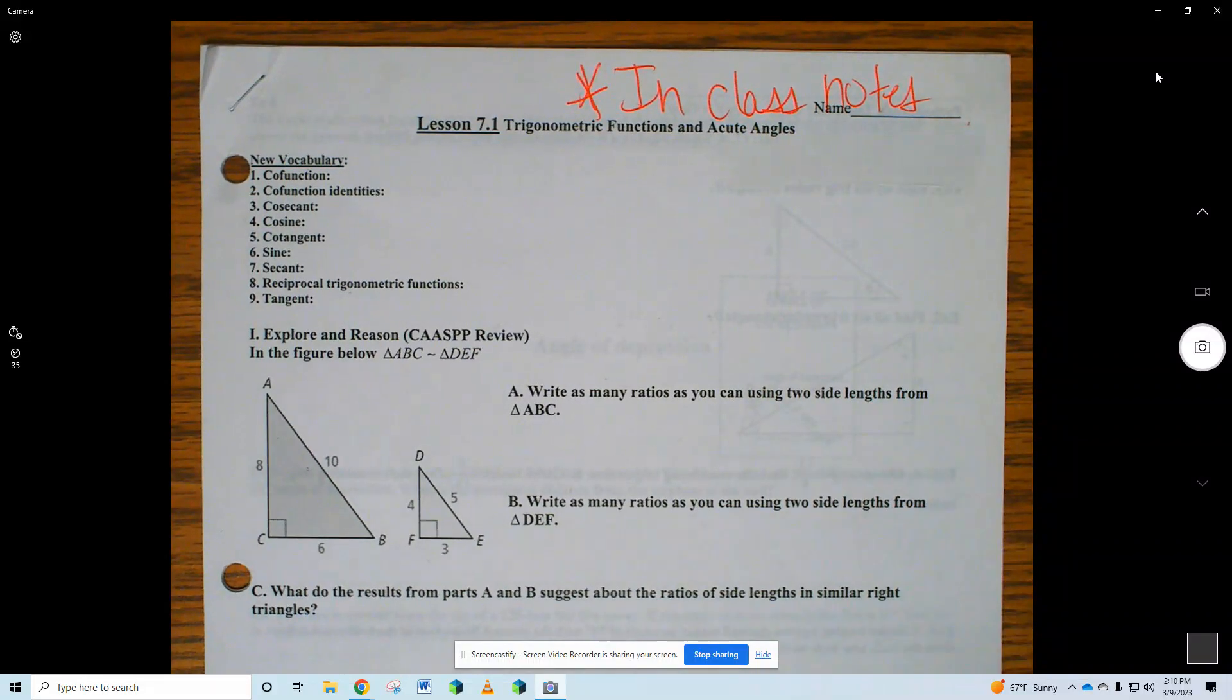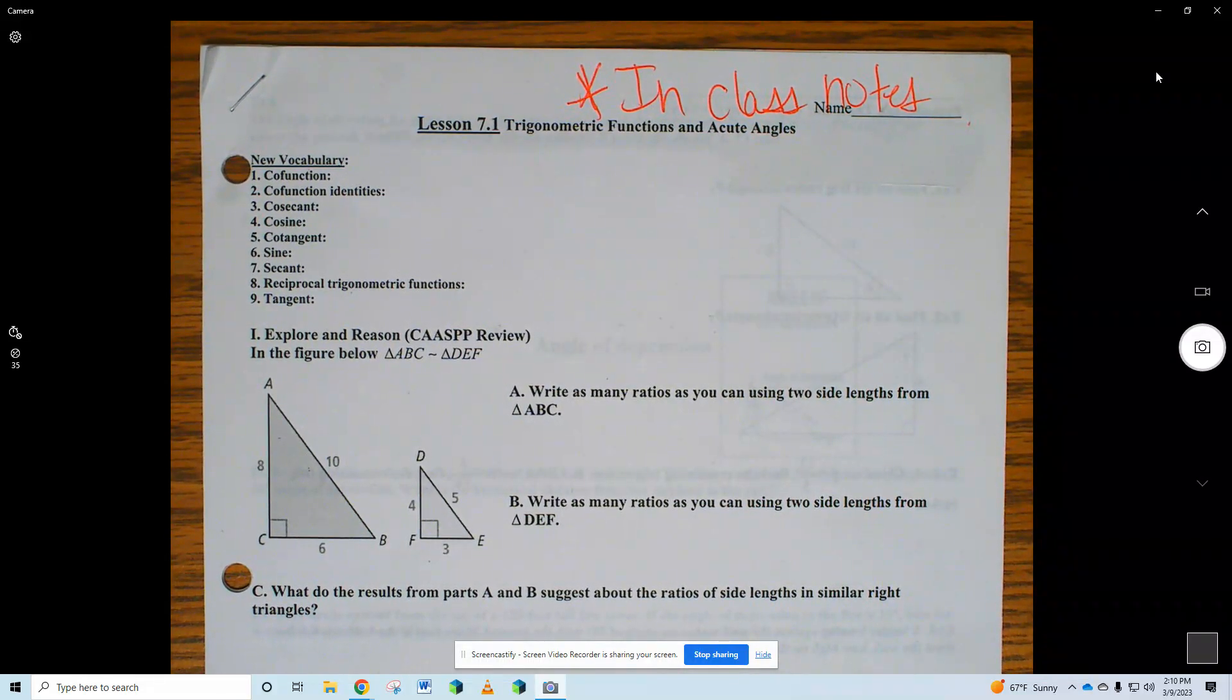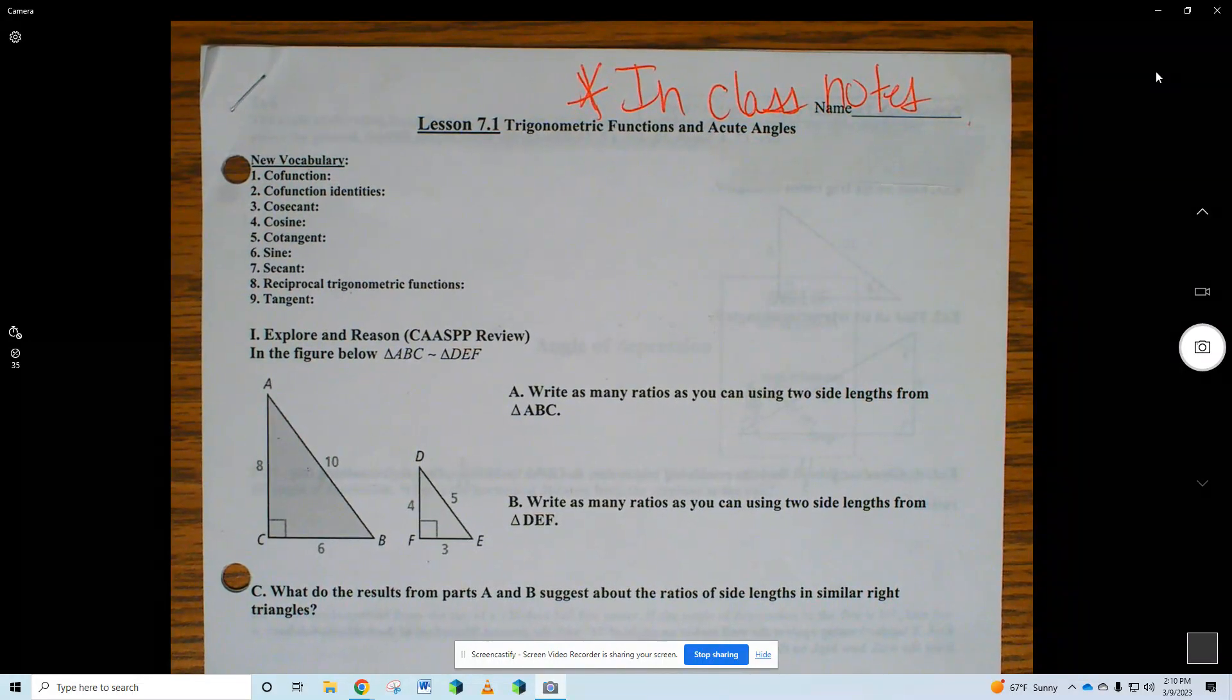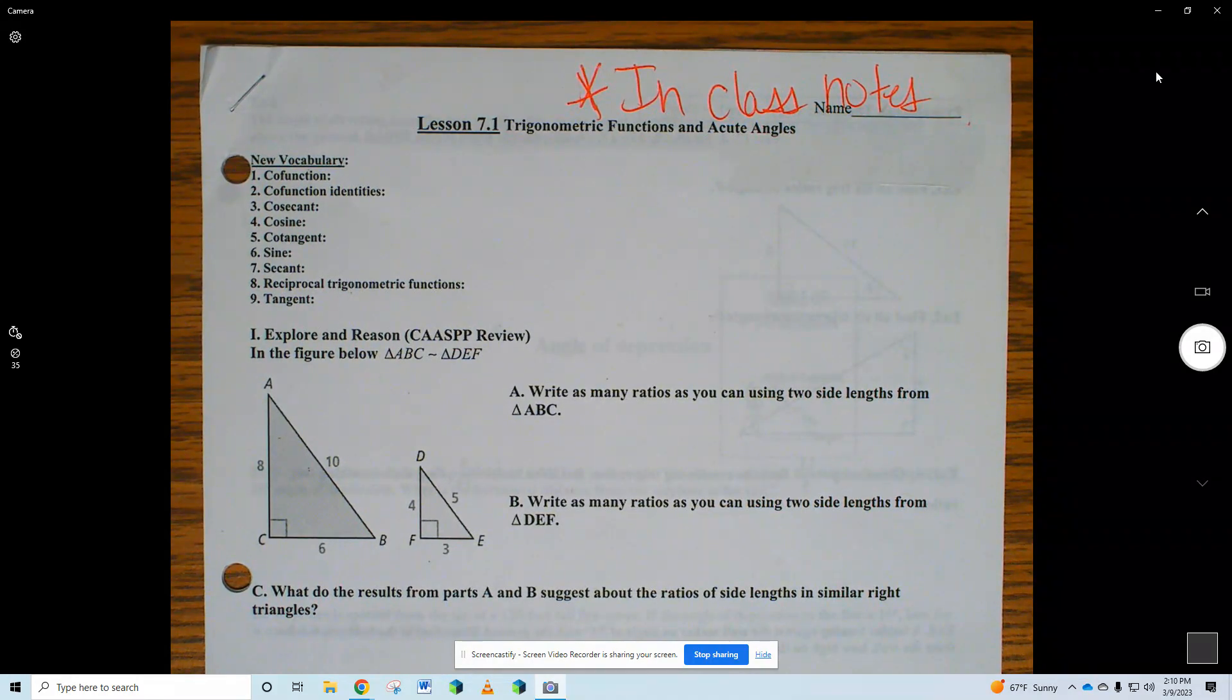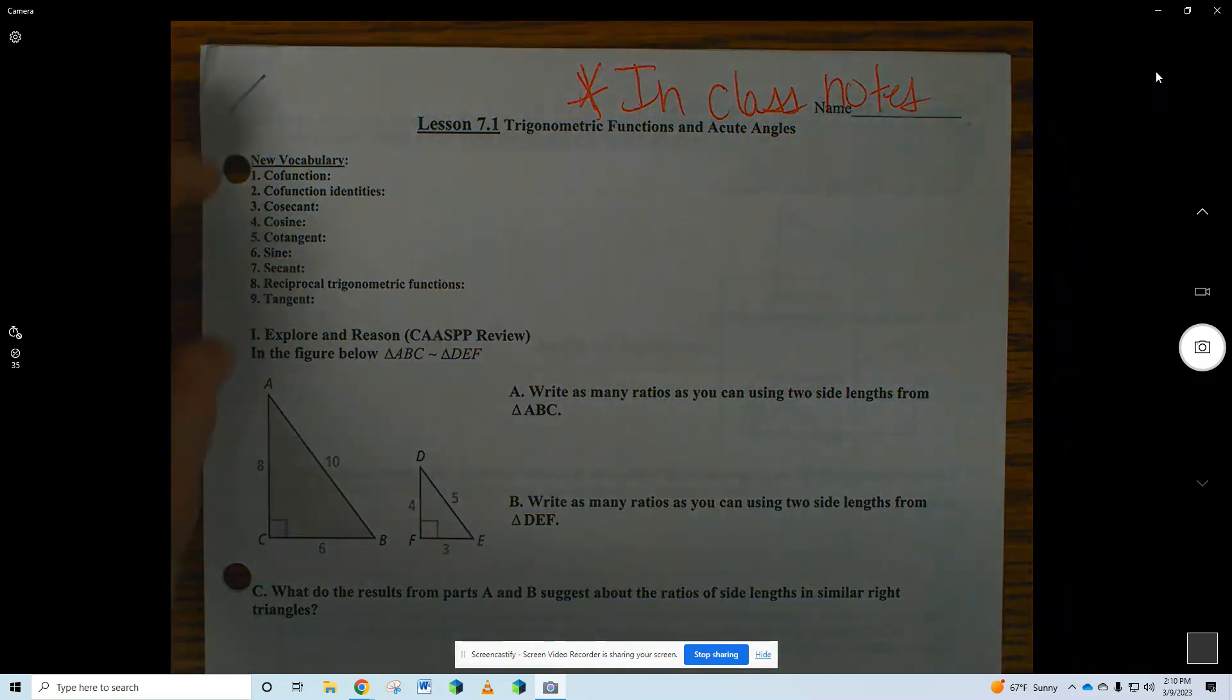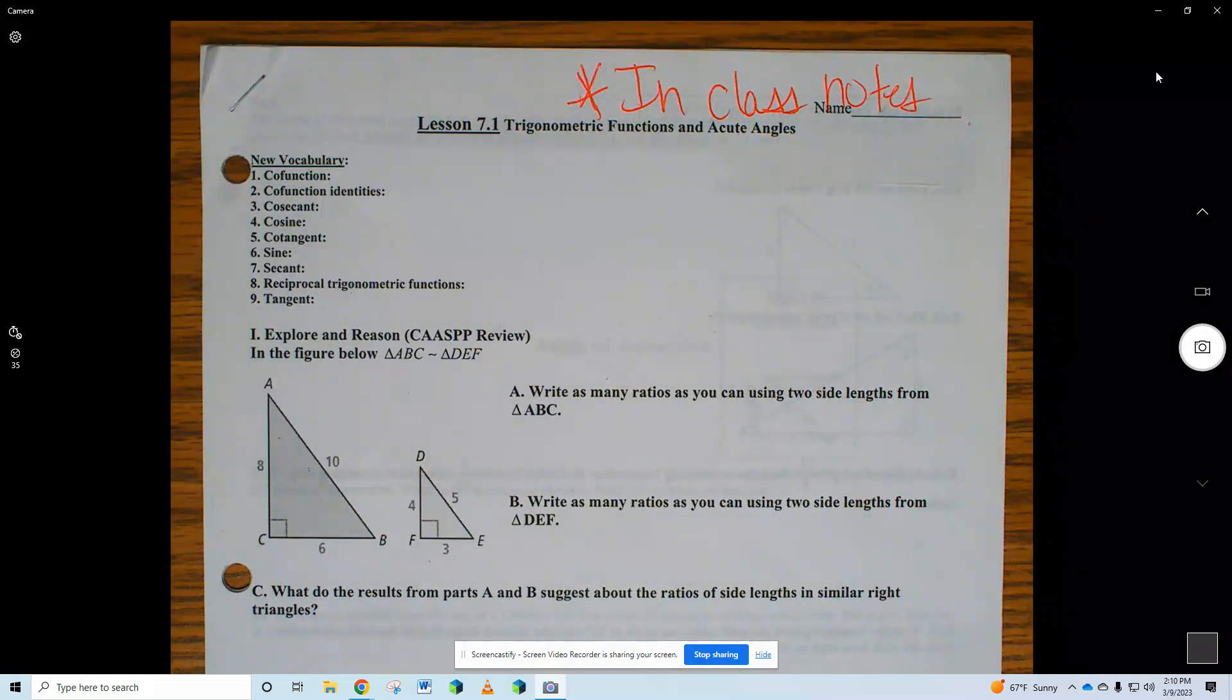We are starting the unit on trigonometry, and this is all about triangle relationships. That's the main idea of this chapter. We will learn how to graph sine and cosine later on. I have this vocab section, but I'm going to be giving definitions as we go through. So I want to just head straight in to number one for us.